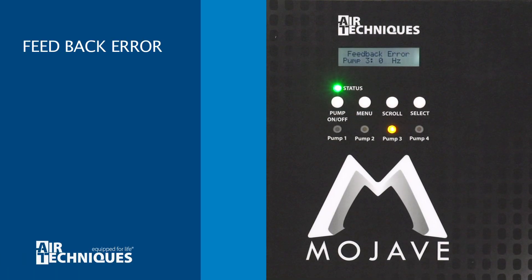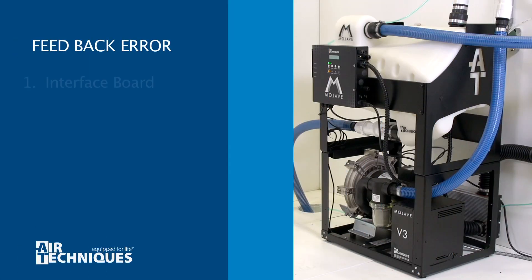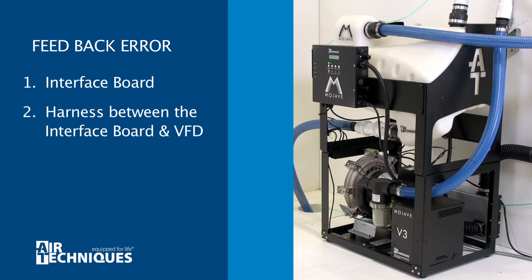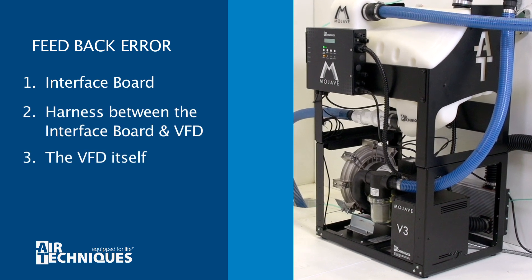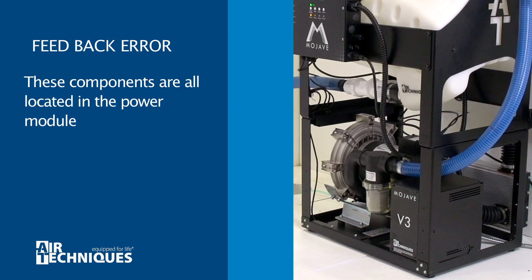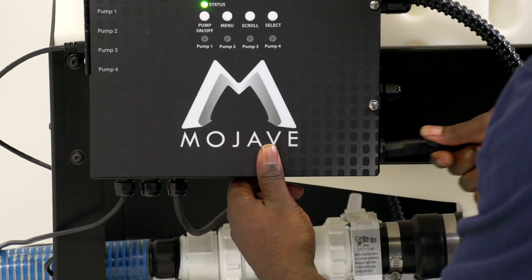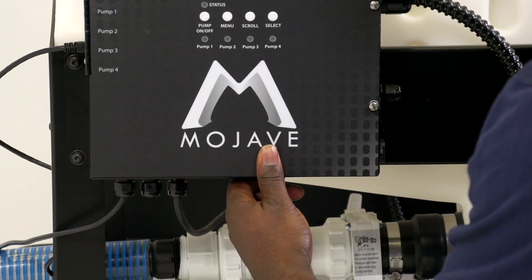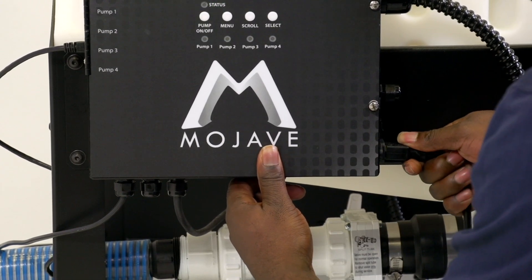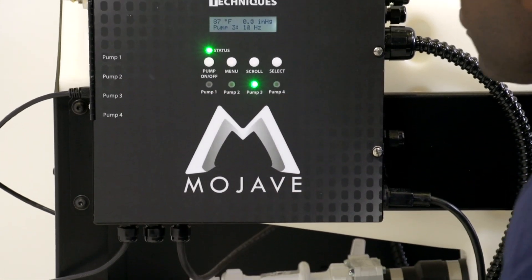When a feedback error occurs, this will usually cause the pump to shut down. The possible problems are the interface board, the harness between the interface board and the VFD, or the VFD itself. All three components are found in the power module. This error will reset itself when the automatic self-diagnosis feature runs, when the pump is disconnected then reconnected, or when power to the MMC is cycled.